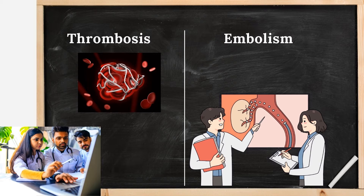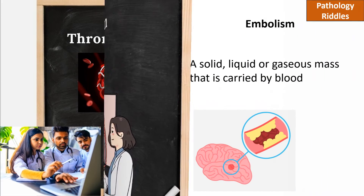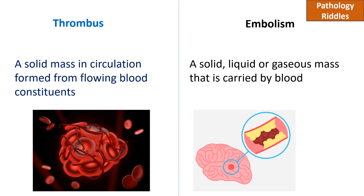Welcome to Pathology Riddles. Today we will be discussing the differences between thrombosis and embolism. A thrombus is a solid mass in circulation formed from flowing blood constituents, while an embolism can be a solid, liquid, or gaseous mass that is carried by blood.